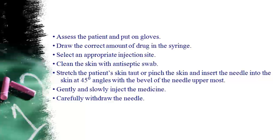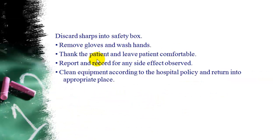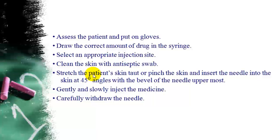Unlike intramuscular injection, for subcutaneous you either stretch the patient's skin taut or pinch the skin slightly. Insert the needle into the skin at a 45-degree angle. Gently and slowly inject the drug. Carefully withdraw the needle slowly. Discard sharps into the safety box. Remove gloves and wash hands. Leave the patient comfortable. Report and record any side effects observed. Clean equipment according to hospital policy and return to the appropriate place.